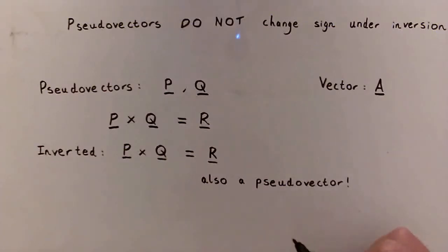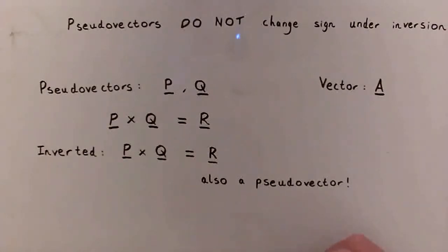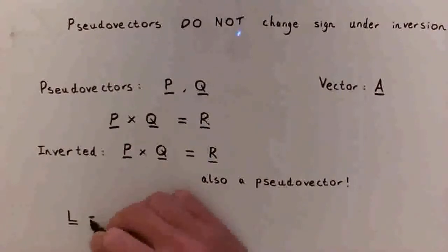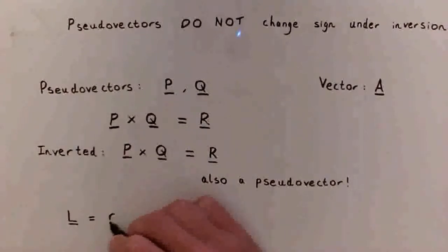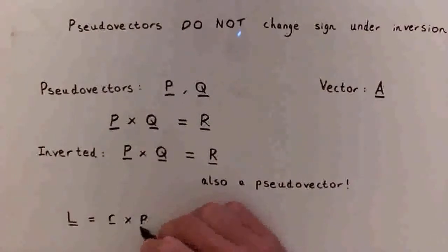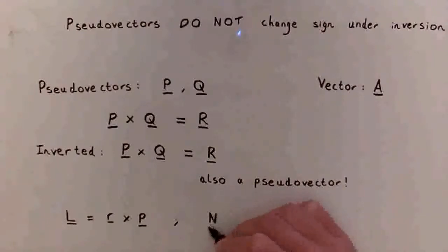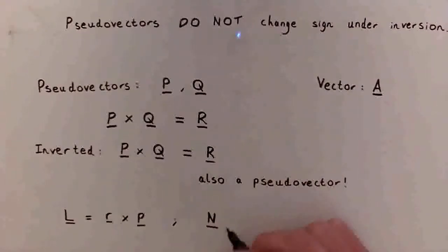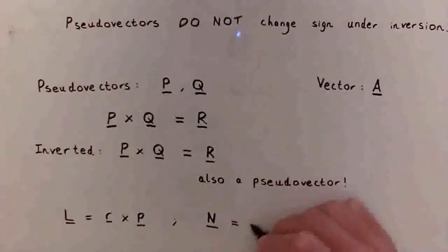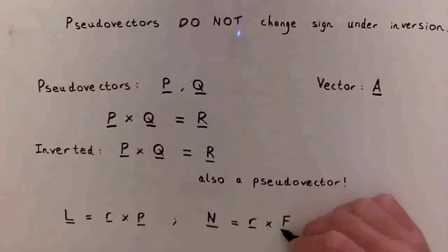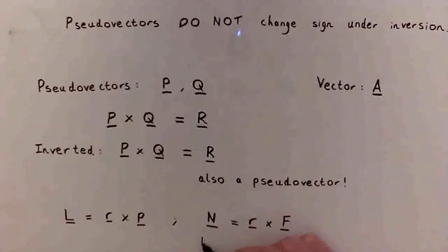The question also wants us to write down two pseudovector quantities found in classical mechanics. The first is angular momentum L, which equals the position vector r cross the momentum vector p. The second is torque, usually denoted by n, which equals the position vector r cross the force vector f.